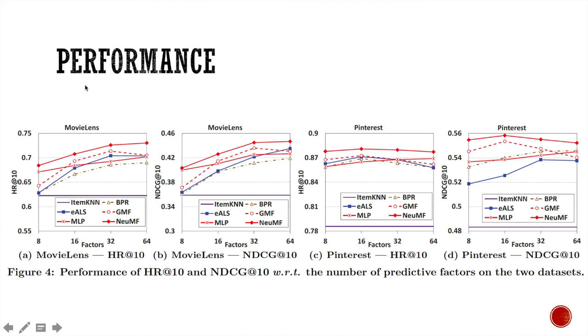So this shows the performance of their final model. They evaluated on two different evaluation metrics, hit ratio and NDCG. You can see that the red line with diamonds here represent their final model. It performs the best on two different datasets, MovieLens and Pinterest.